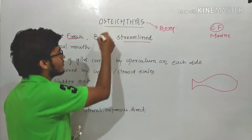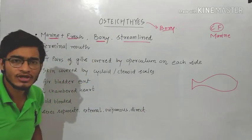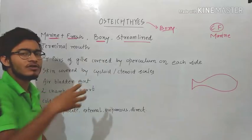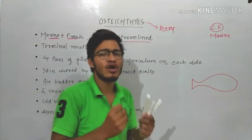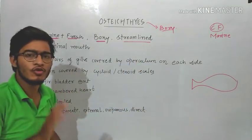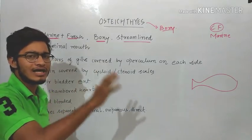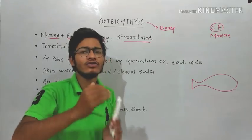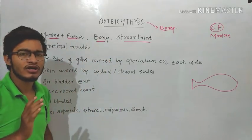In case of the endoskeleton, it is bony in Osteichthyes. 'Osteo' simply means bones, meaning the endoskeleton is made of bones in case of bony fishes. In cartilaginous fishes it is made of cartilage. So the endoskeleton is a very important difference between the two groups.